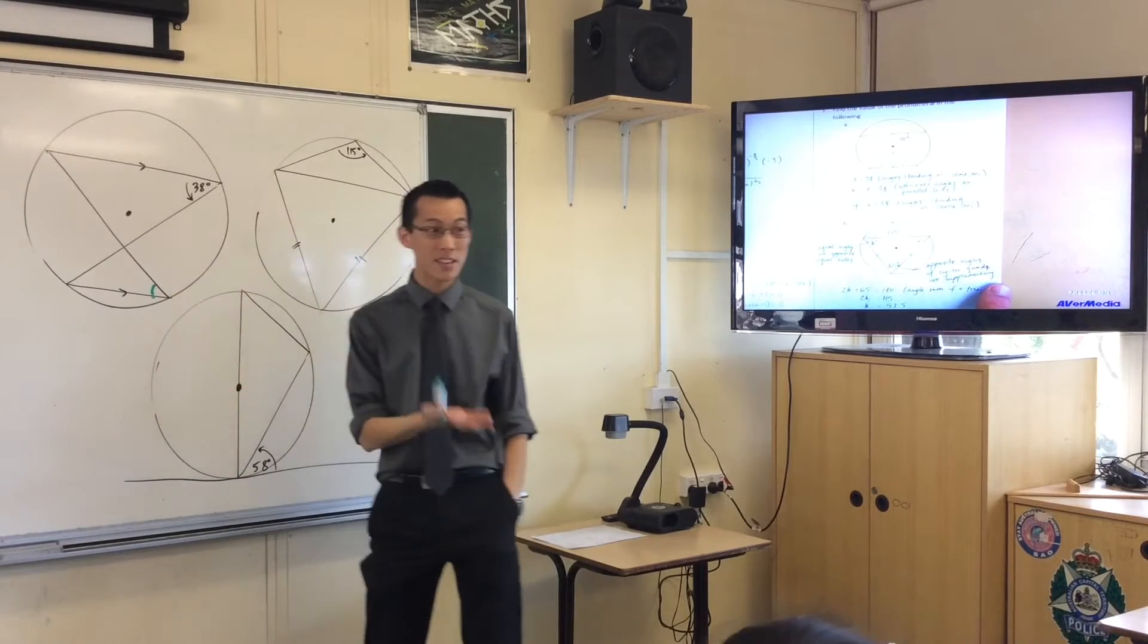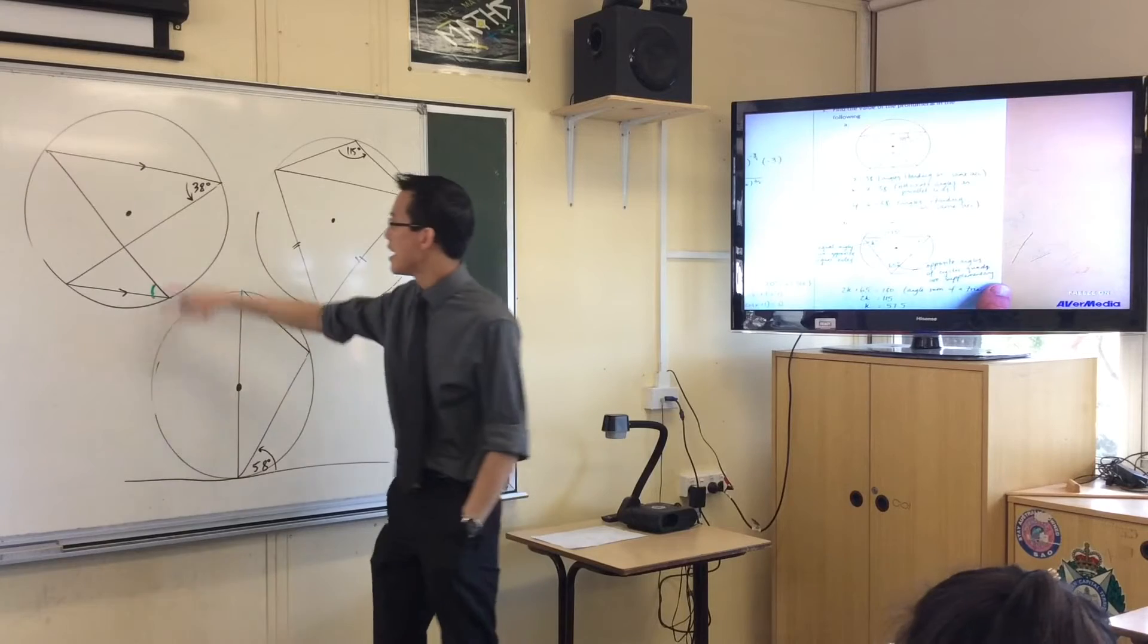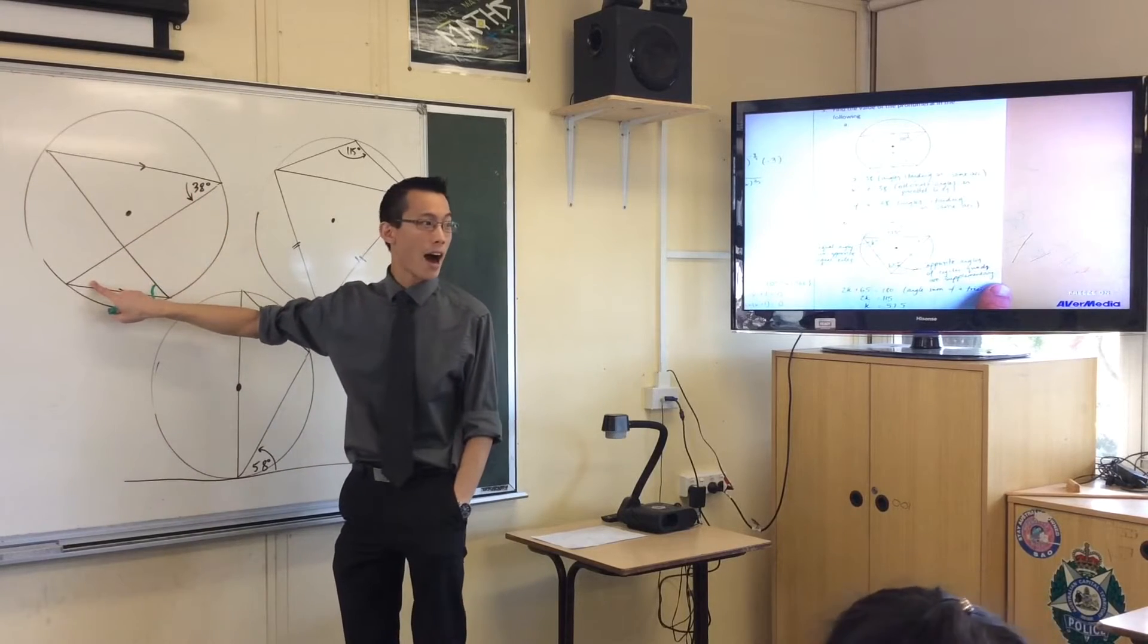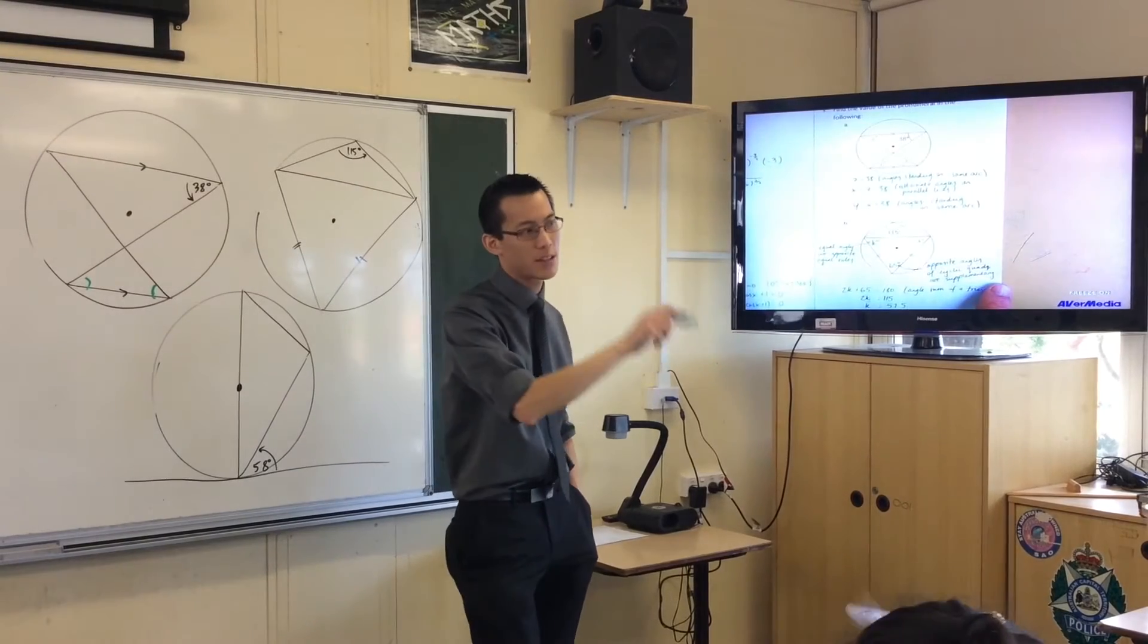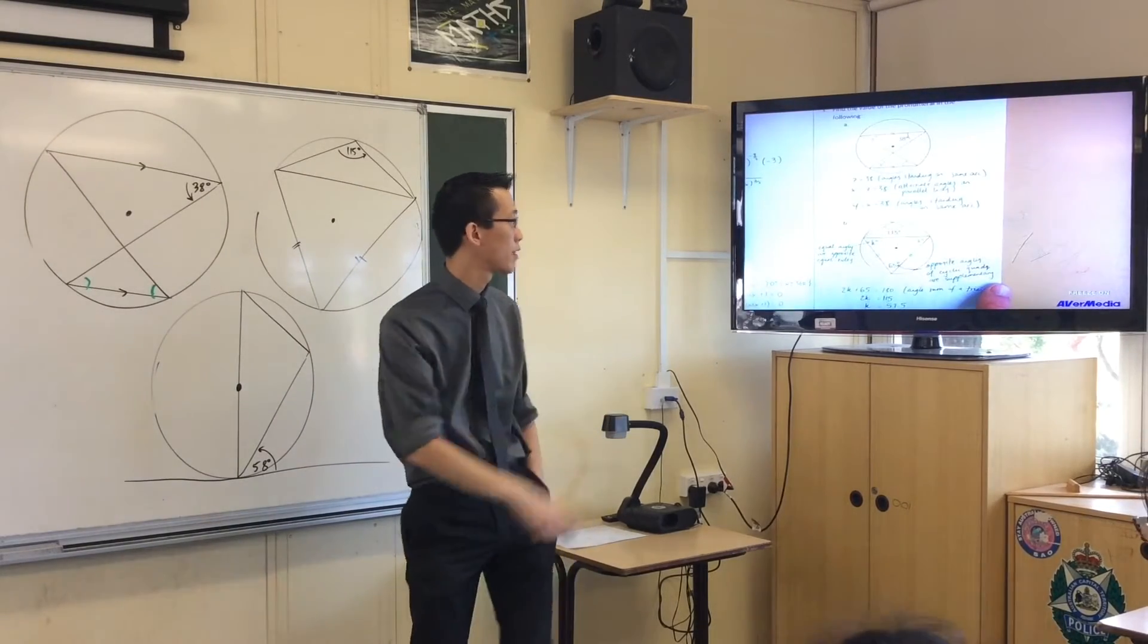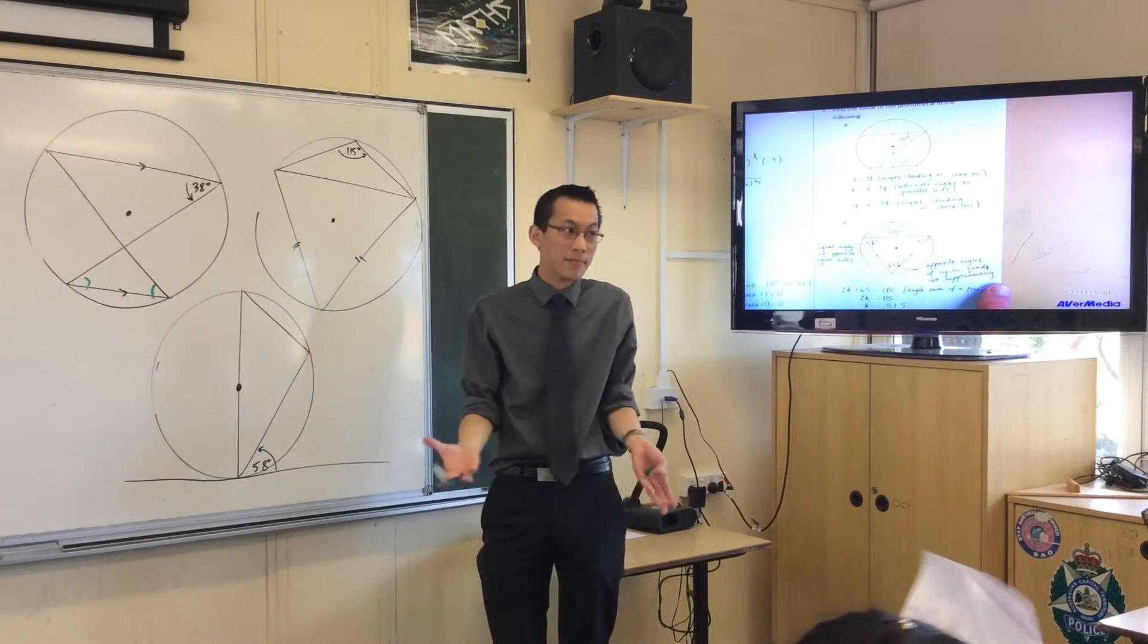Now alternatively, the next easiest one, or maybe the equal easiest one, is that this 38 and this 38 are alternate angles on parallel lines. Please indicate parallel lines. You can see I've reasoned there. I don't know what they're called, but they're parallel.